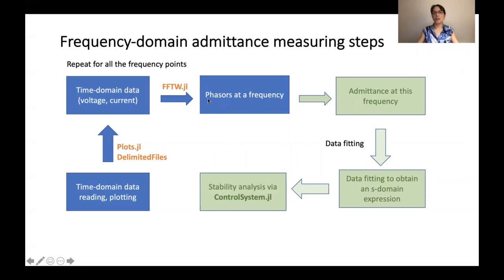Finally, then we can just use FFTW package. It's really nice to grab the phases out. Phases of voltage current and then this part is not data-intensive. After you have phases at each frequency, you just grab their ratios to get the admittance at this frequency.